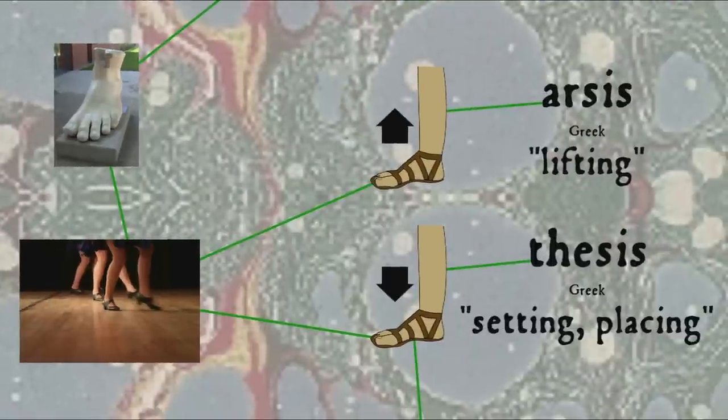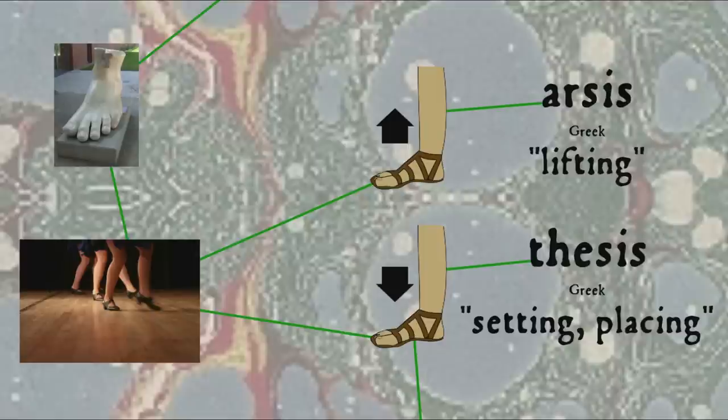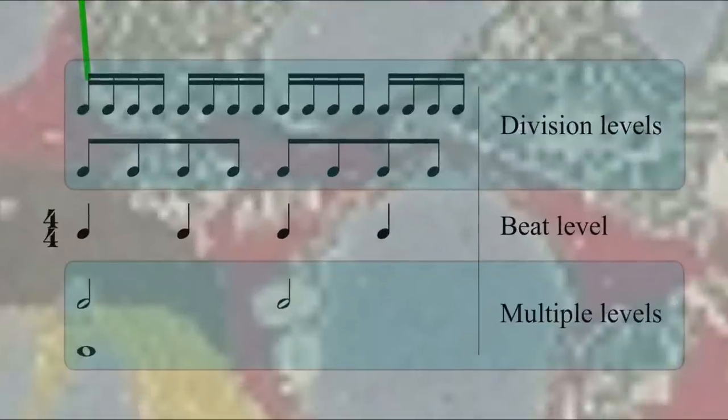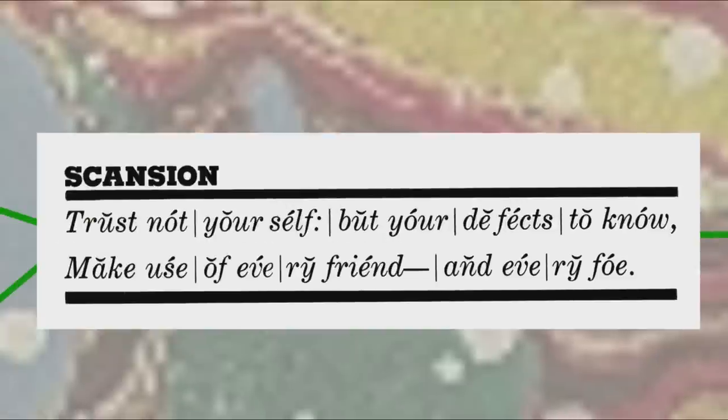Each foot in this Greek system, therefore, has a part where the foot is raised and a part where it's put down. In Greek, arsis, literally lifting, and thesis, setting or placing, though there's disagreement about how to use these terms in English depending on whether you're talking to a metricist or a musician. The point being, a foot will involve a combination of stressed and unstressed syllables in modern English meter,